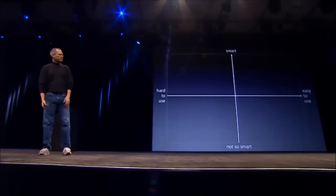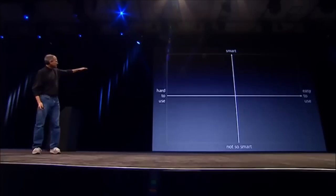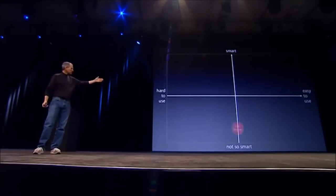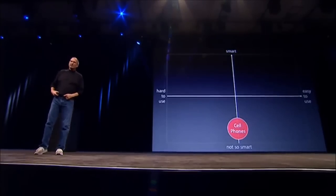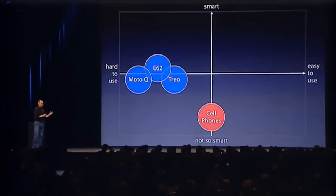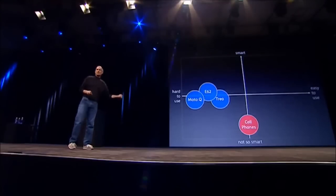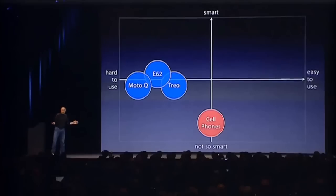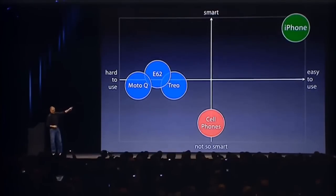They're not so easy to use. So if you make a business school 101 graph of the smart axis and the easy-to-use axis, regular cell phones are right there — not so smart and not so easy to use. Smartphones are definitely a little smarter, but they're actually harder to use — really complicated just for basic stuff. We don't want to do either of those things. What we want to do is make a leapfrog product that is way smarter than any mobile device has ever been and super easy to use. This is what iPhone is.